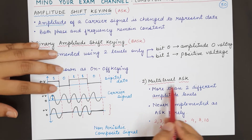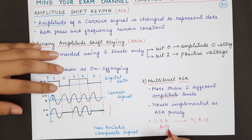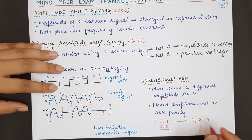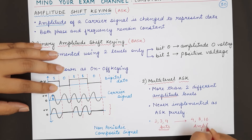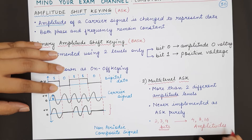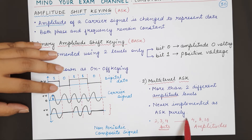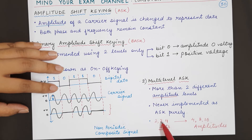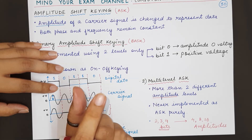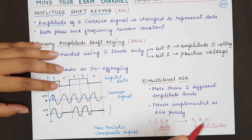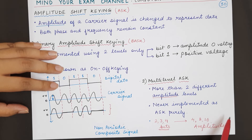In any multi-level ASK, if you want to represent 2 bits then you will have 4 different amplitudes, because 2 bits result in 4 combinations — and each data element is represented by a unique amplitude value. Similarly, for 3 bits the unique data elements will be 2 raised to the power 3, which is 8, so you will have 8 different amplitudes. For 4 bits you will have 16 different amplitudes, and so on.